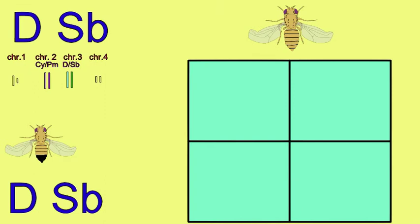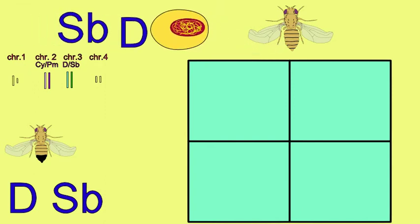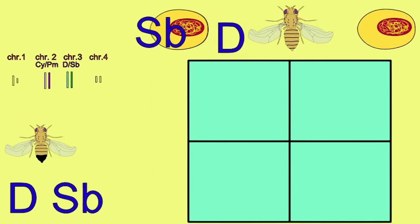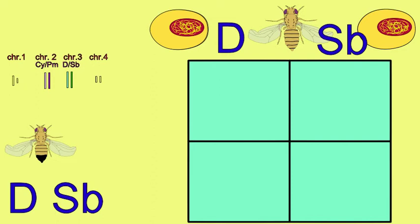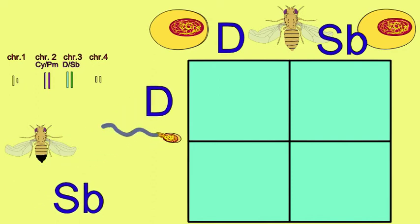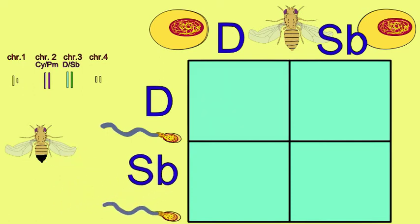The same is true of the chromosome 3 mutations, dicete and stubble. These are each located on a separate chromosome 3, and so a sperm or ovum will receive a chromosome 3 with dicete or stubble, but not both.